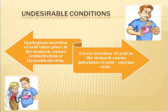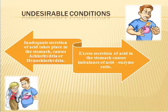Now we will discuss about the undesirable conditions of the gastrointestinal tract. There are many undesirable conditions. First, inadequate secretion of acid takes place in the stomach — this causes achlorhydria or hypochlorhydria. Excess secretion of acid in the stomach causes an imbalance of the acid-enzyme ratio, leading to hyperacidity and ulcers.